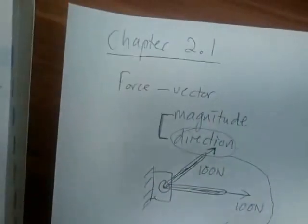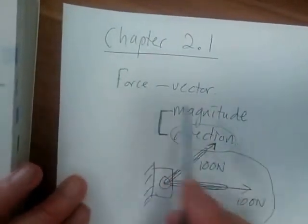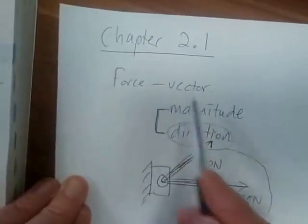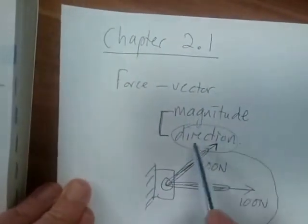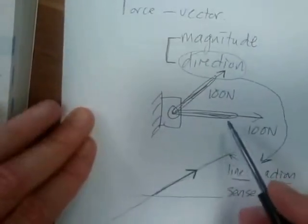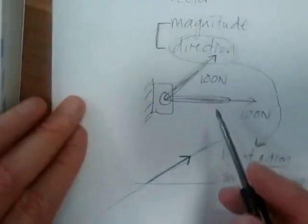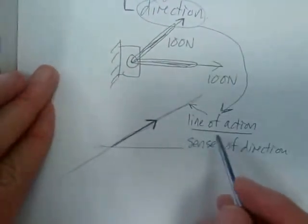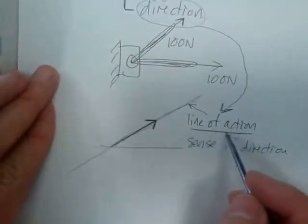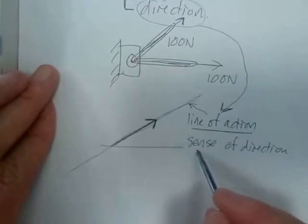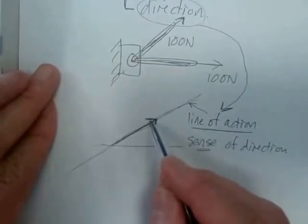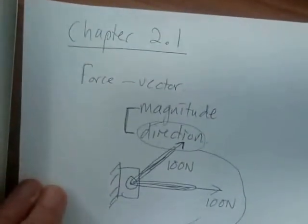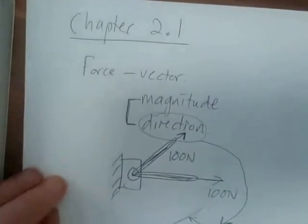So just to recap: force is a vector, it has magnitude and direction. And its direction is defined by its line of action and the sense, which refers to the tip. I think that's good for now. Thank you.